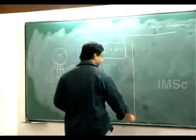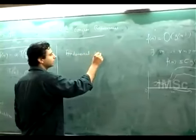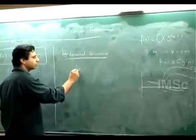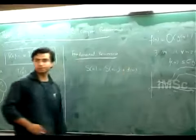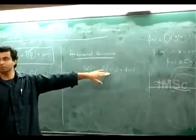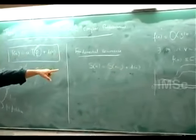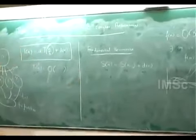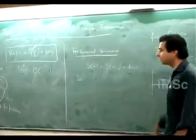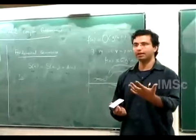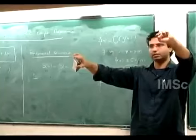We will start with the fundamental recurrence: S(n) = S(n-1) + d(n). To solve this problem of size n, I need to solve a problem of size n minus 1 plus some extra work. One example with this recurrence structure is adding n numbers. If I want to add a_1 to a_n, I just pick one number, add the remaining n minus 1 numbers, and then add that one number to the sum obtained.